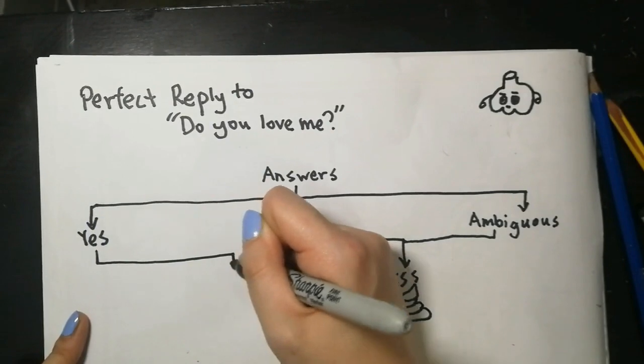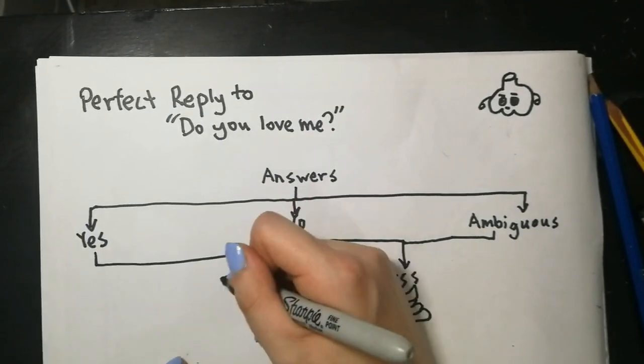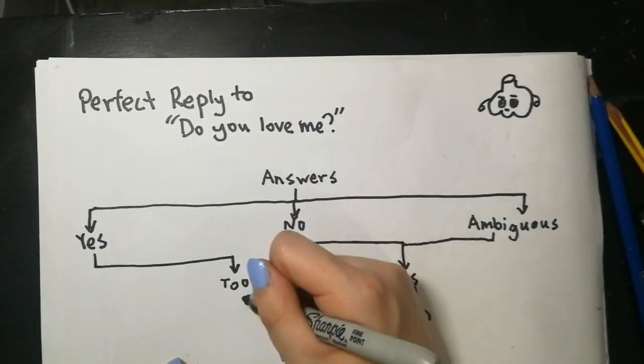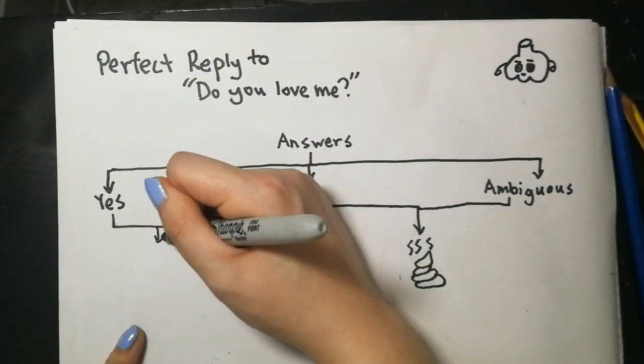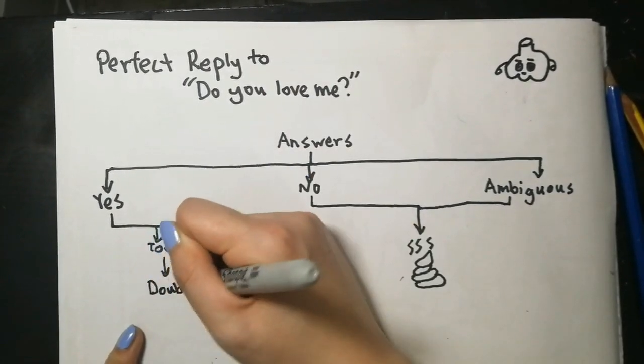The delivery matters as much, if not more, than the content of your answer. If you answer too quickly, your partner might suspect that you're being disingenuous. If you answer too slowly, your partner might suspect that you're doubtful about your answer.